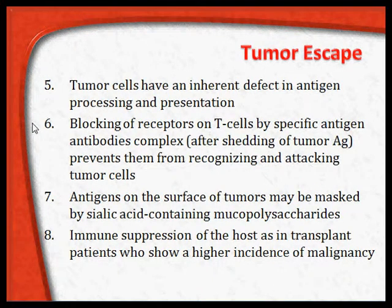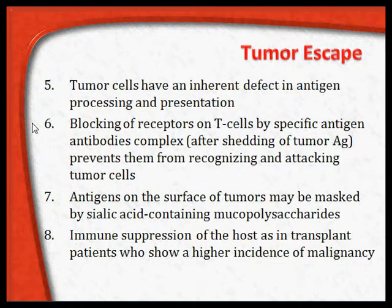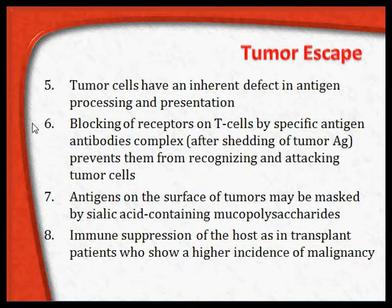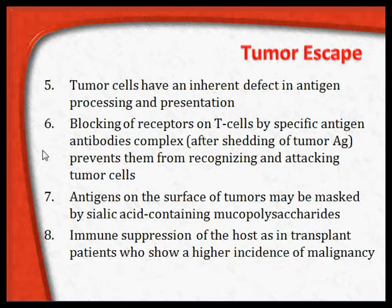Another mechanism is blocking of the receptors of T cells by specific antigen-antibody complexes after shedding of the tumor antigen. When the tumor antigen is shed into the circulation, it triggers antibodies. These antigen-antibody complexes coat and block the receptors of the T cells, preventing the T cells from seeing and attacking the tumor cells.